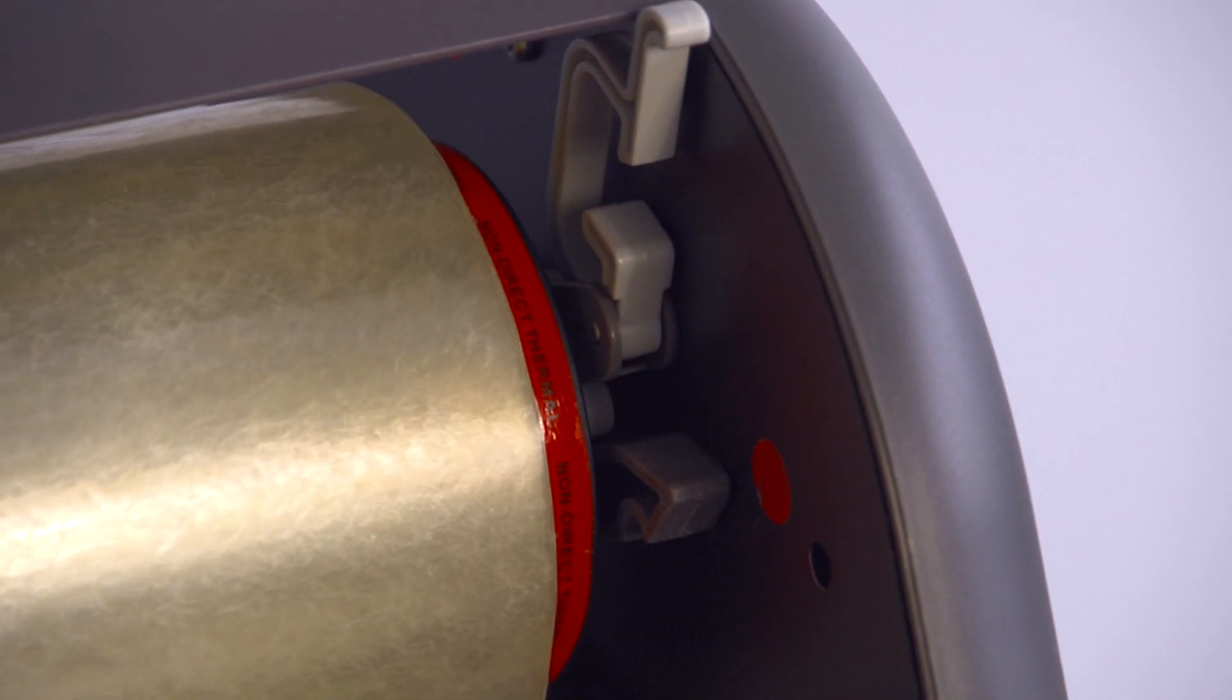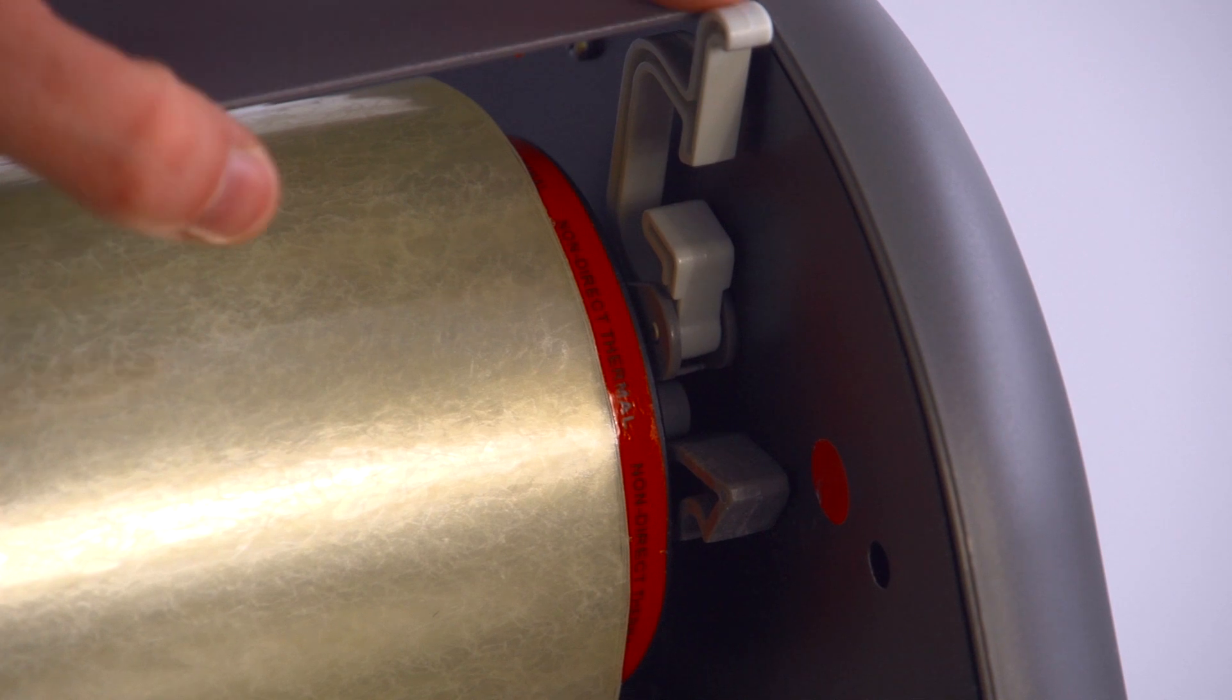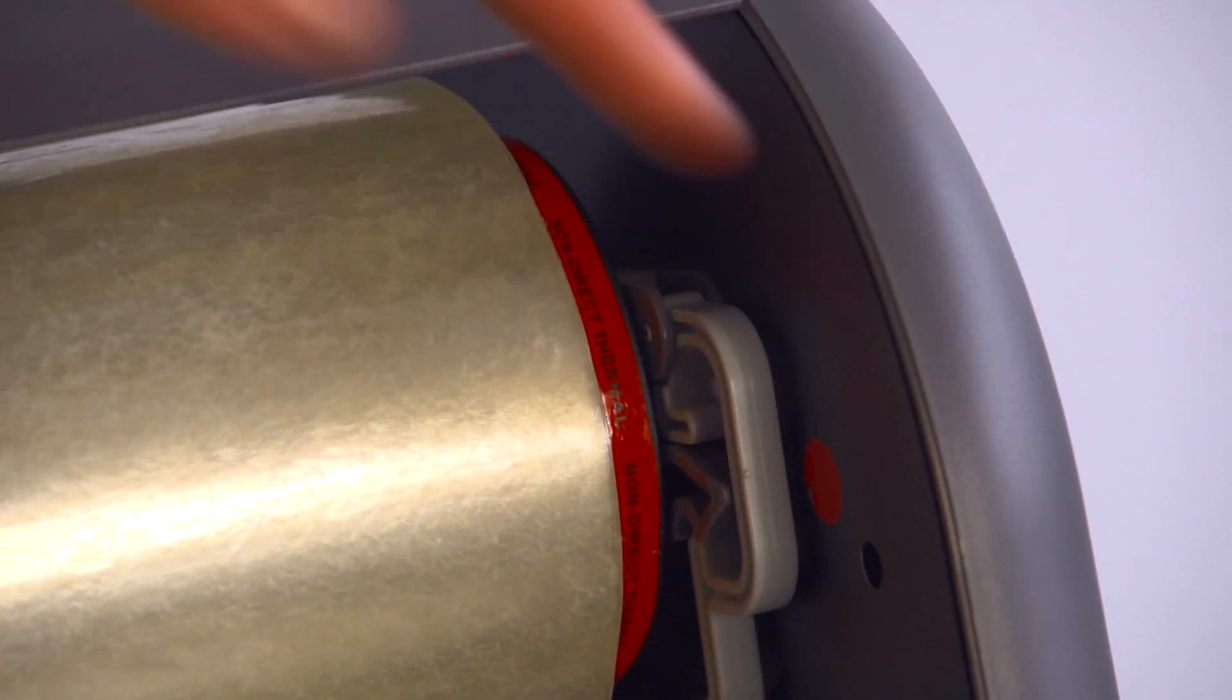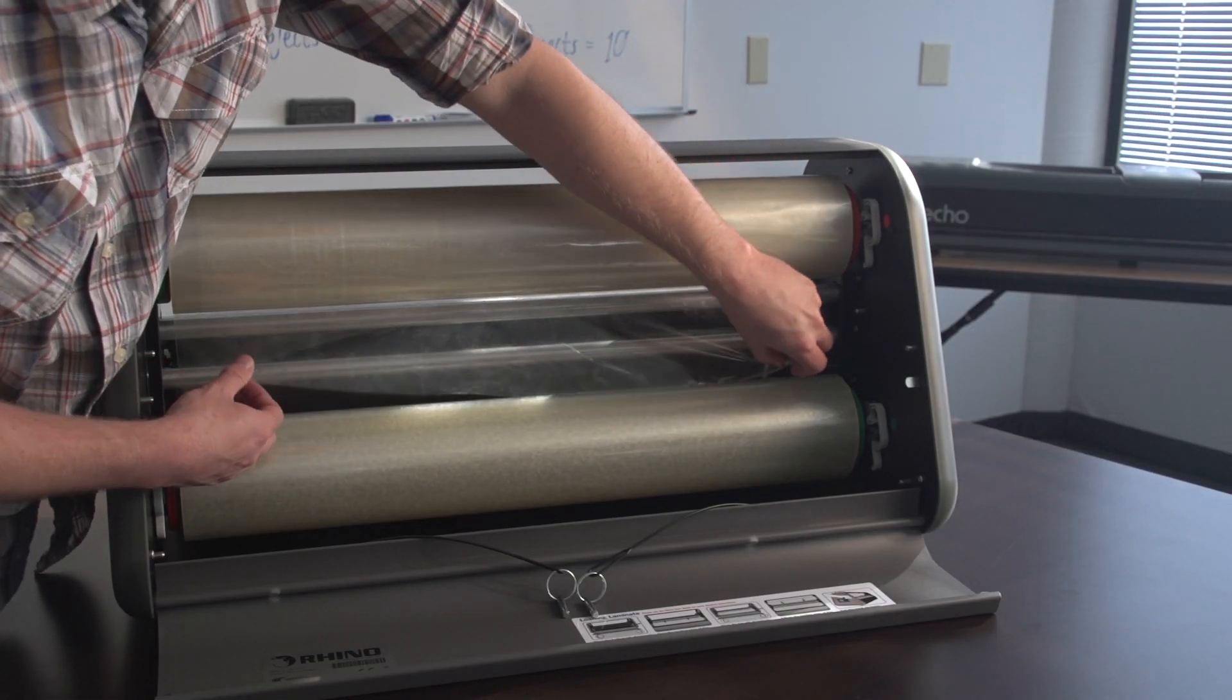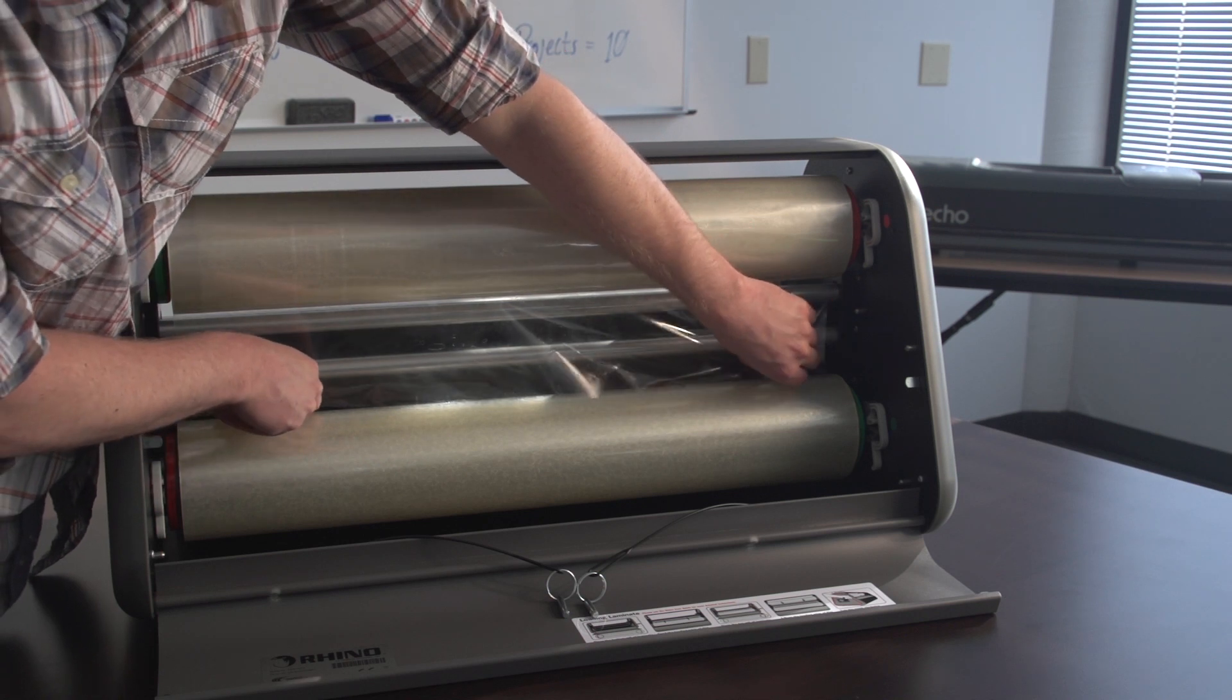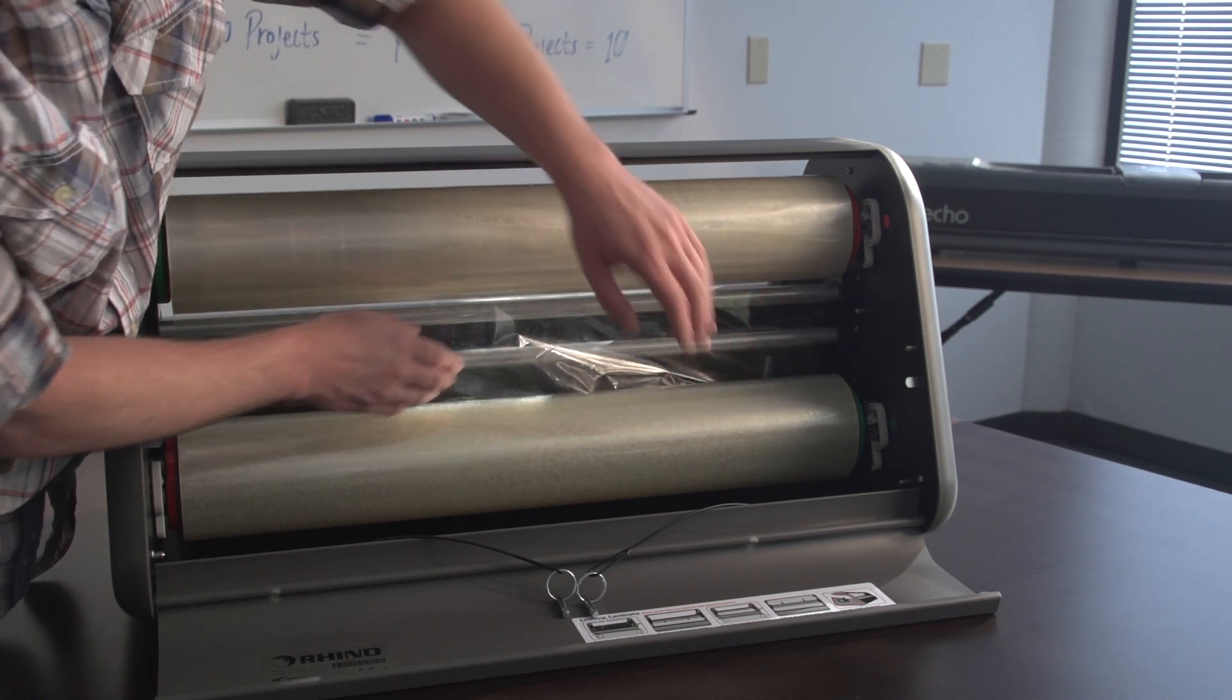Next, insert the top roll and close the latches on its brackets. Unroll a few inches of laminate film from the top roll and press it down to stick to some of the exposed adhesive from the bottom roll.